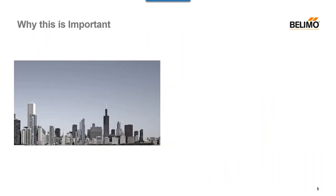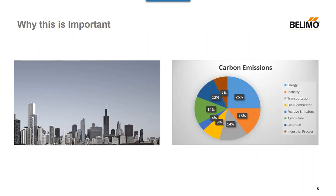So let's talk about why this is so important. Buildings are an integral part of the energy system. In terms of carbon emissions output by industry, 25% of carbon emissions are directly related to energy, and buildings use a lot of energy. The next largest contributors are industry itself, then transportation. Energy is really one of the biggest producers of the carbon footprint we're looking at today, and buildings go hand in hand with that.